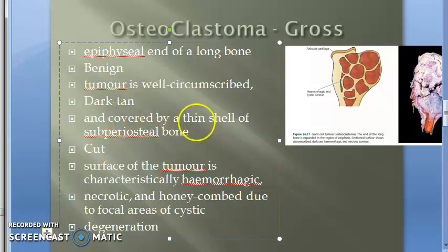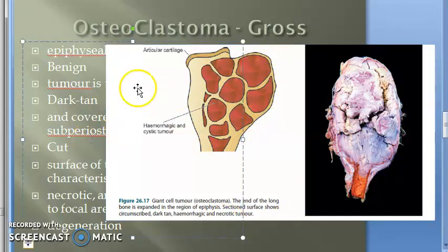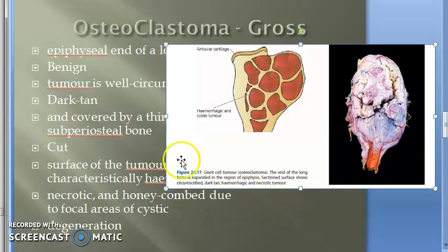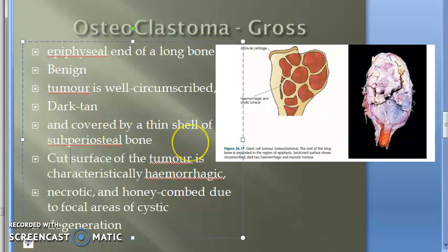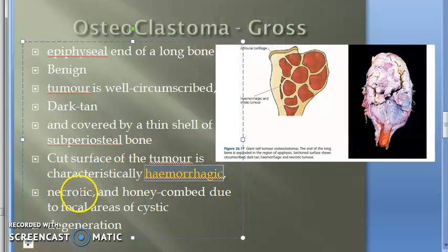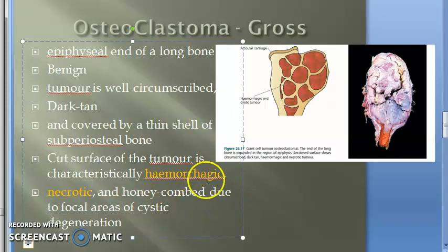The tumor is covered by a thin shell of sub-periosteal bone. Now the cut surface of the tumor — in gross you explain how it looks from outside, then you cut it. The cut surface of the tumor is characteristically hemorrhagic.